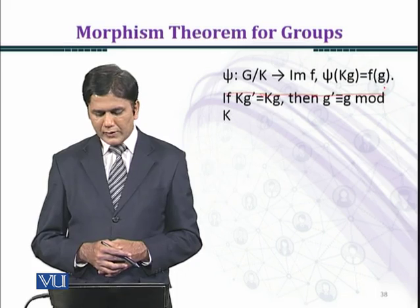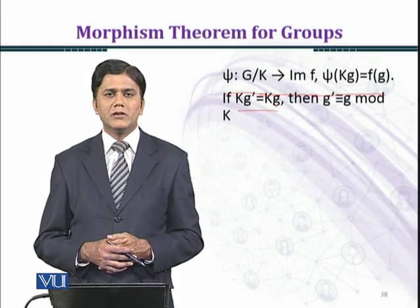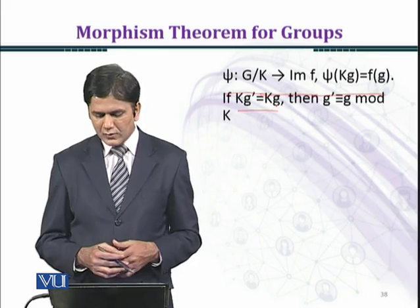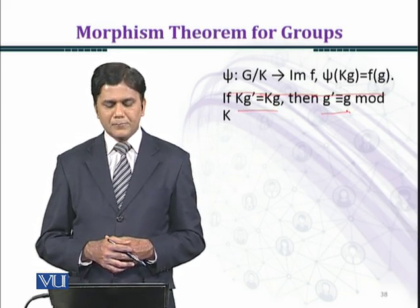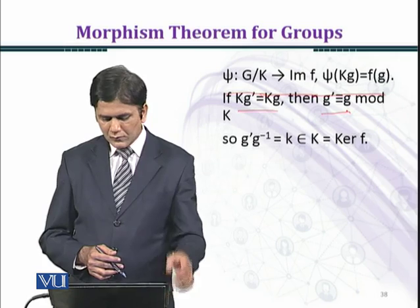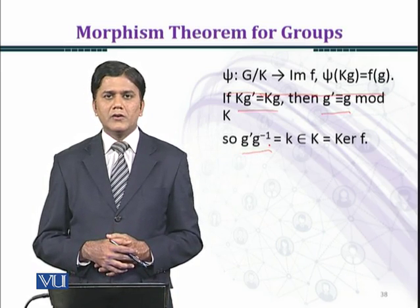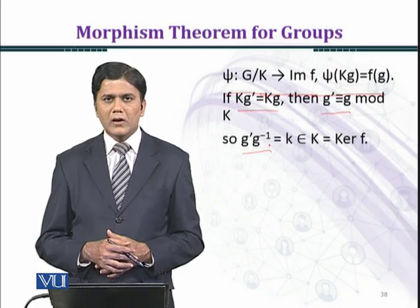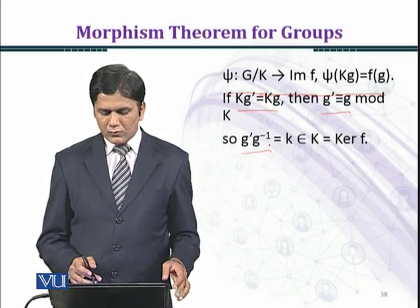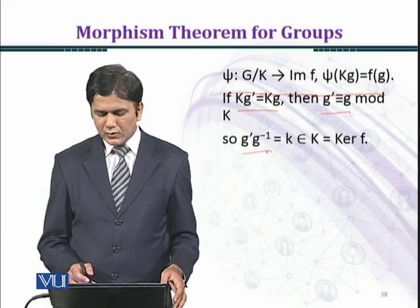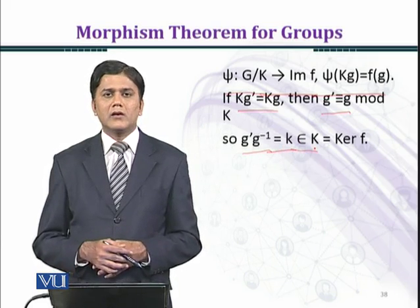If KG prime equals KG, meaning we have chosen two elements G and G prime of the group G in the same coset, then G prime is congruent to G modulo K. Taking G inverse on the right-hand side, we obtain G prime G inverse equal to K, which belongs to the kernel of F.